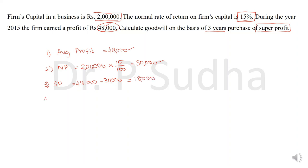Now we calculate goodwill. Goodwill equals super profit into number of years of purchase. The question gives 3 years of purchase, so 18,000 multiplied by 3 gives goodwill of 54,000. I hope you understood how to calculate this problem.